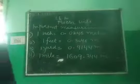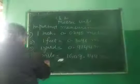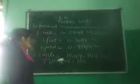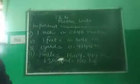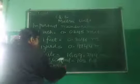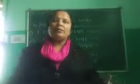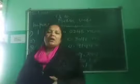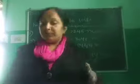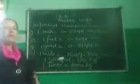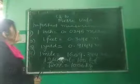One quintal is equal to 100 kilograms. One tonne is equal to 1,000 kilograms. And you should also know that 1 liter is equal to 1,000 milliliters. So these are some important measurements.